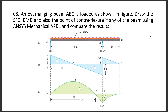Hello viewers, today I am going to show finite element analysis of an overhanging beam under uniformly distributed loading. Let us see the statement of the problem. An overhanging beam is loaded as shown in figure. Draw the SFD and BMD and also point of contraflexure, if any, of the beam using ANSYS Mechanical APDL and compare the results.